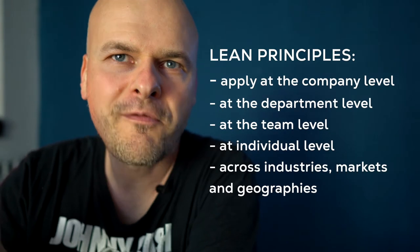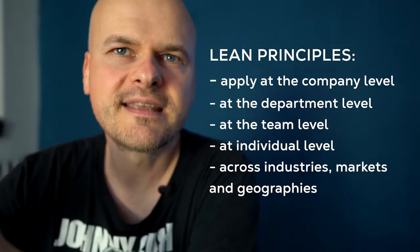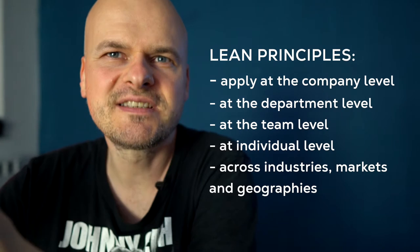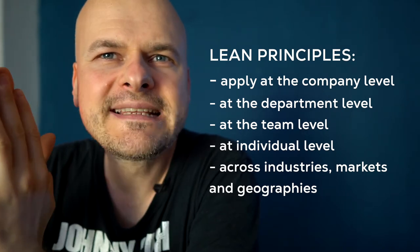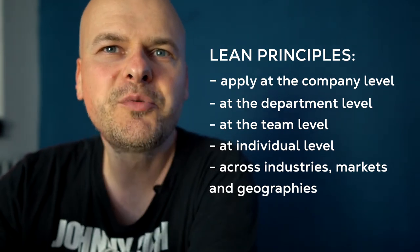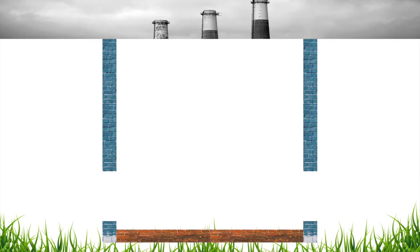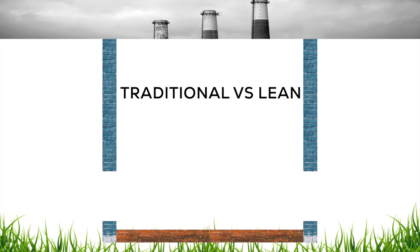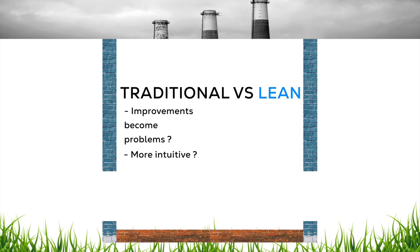We're going to understand Lean by looking at how a factory works. This example is of a factory because it's just easier to show, but it would be exactly the same if this were software development, a bank, a design agency, or whatever. The Lean principles are the same — it is just the specifics that sometimes differ. The point of this example is to show you the traditional way of reacting to business demands, but also to see how traditional improvements can become problems in themselves.